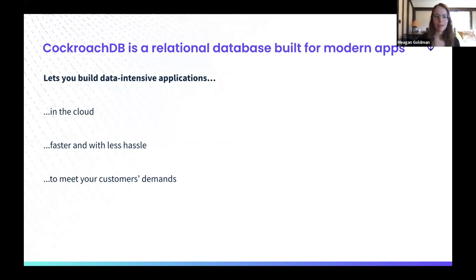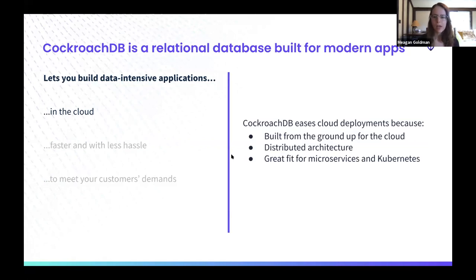CockroachDB is a database that lets you build data-intensive applications in the cloud much easier and with less hassle than you might imagine from a traditional relational database. It has a lot of key characteristics that help you meet the modern customer's demands for an application. I'll just go through each of these points pretty briefly. CockroachDB was really built from the ground up for the cloud. It is a relational database, but it's architected to be a really good fit for the cloud. It has a distributed architecture.